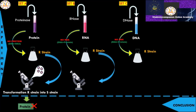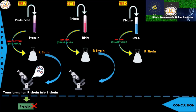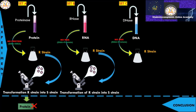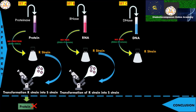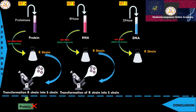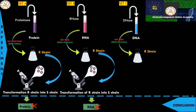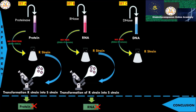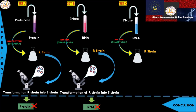After observation from the second set, live S strain was again found. This means that the R strain was transformed into S strain again. Hence it can be concluded that RNA is definitely not the genetic material, because in its absence transformation still occurred.